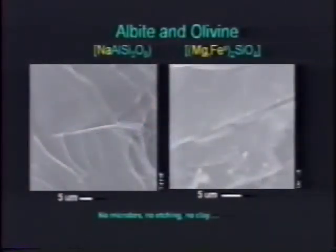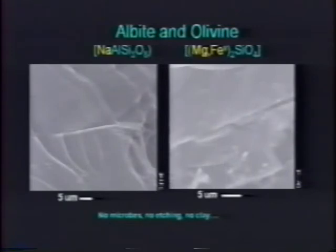Albite was uncolonized, unweathered, and there was no clay precipitate. Olivine, which should have been the thing to dissolve based on its solubility, was uncolonized, unweathered, and had no clay precipitate. Neither one of these minerals had any phosphorus in them.